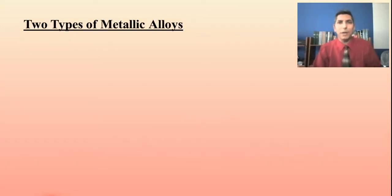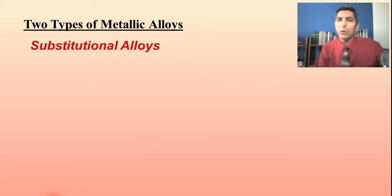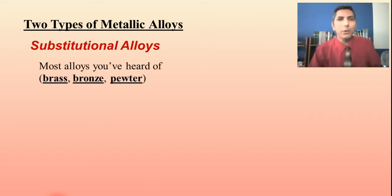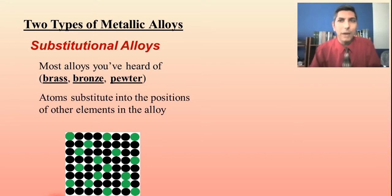Let's take a look at a couple types of metallic alloys. Whenever we talk about metals, alloys need to be in there too, because in the real world we're usually not working with pure metals very often but rather we're actually working with metal alloys. Substitutional alloys are most of the alloys that you've heard of, like brass or bronze, pewter. In this case you have atoms that are actually substituting into the positions of other elements in the alloy.